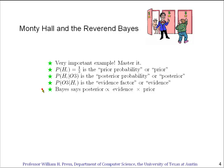And what Bayes' theorem says, in essence, is that the posterior is always proportional to the prior times the evidence. And that's the end of this lesson.